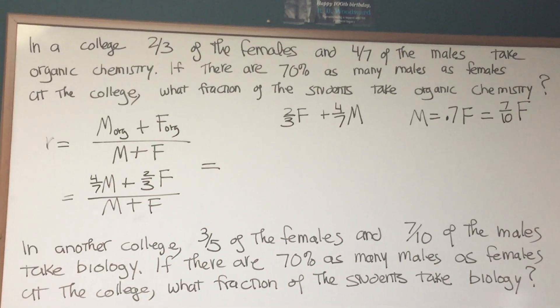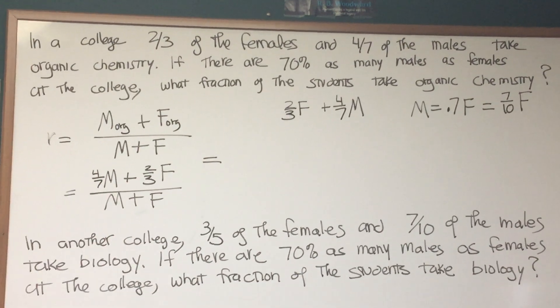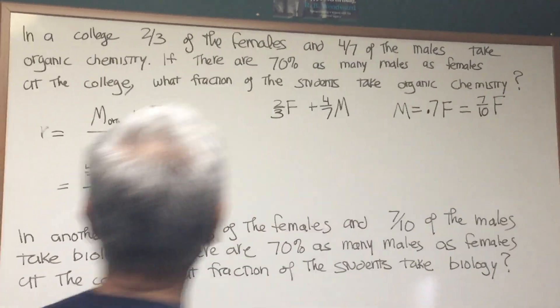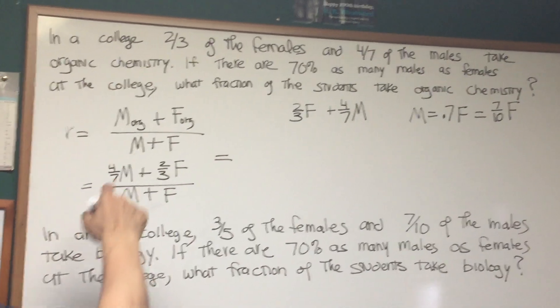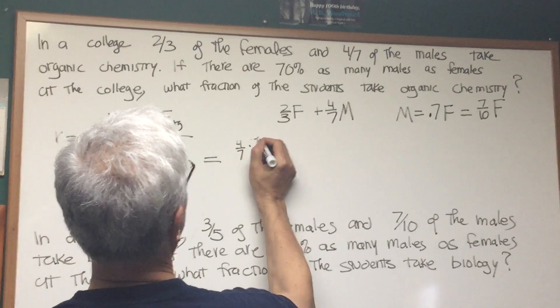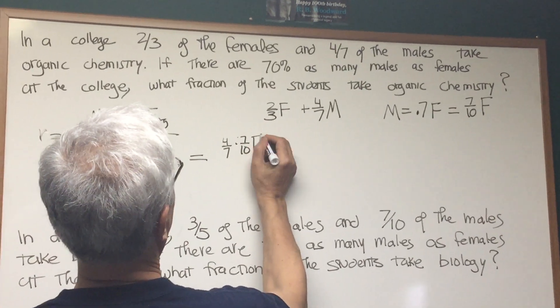Here's our basic formula. Here's the ratio we're looking for. The total number of males taking organic plus the total number of females taking organic. Let's rewrite this as the number of males taking organic is equal to four-sevenths m. The number of females taking organic is two-thirds of f, the female population, divided by m plus f.